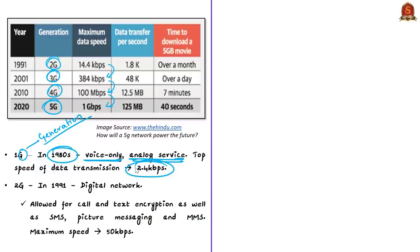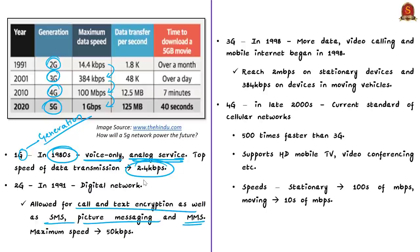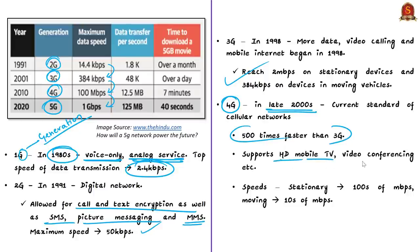The 2G network began in 1991. This allowed cell phones to move into the digital world. 2G allowed for call and text encryption, short messaging service (SMS), picture messaging, and multimedia messaging service. The maximum speed for 2G was about 50 kbps. The 3G network came in 1998, allowing for more data, video calling, and mobile internet. 3G networks reached 2 Mbps speed on stationary devices and 384 kbps on moving devices. The current standard, 4G, was released in the late 2000s and is 500 times faster than 3G, supporting high-definition mobile television and video conferencing.